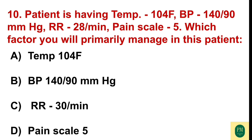A patient has temperature 104°F, BP 140/90 mmHg, RR 28 per minute, pain scale 5. Which factor will you primarily manage? Option A: temperature 104°F. Option B: BP 140/90 mmHg. Option C: RR 30 per minute. Option D: pain scale 5. The correct option is Option A — temperature 104°F.